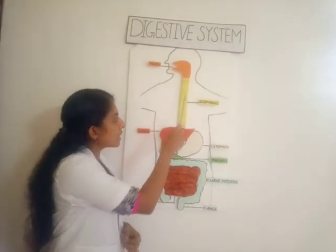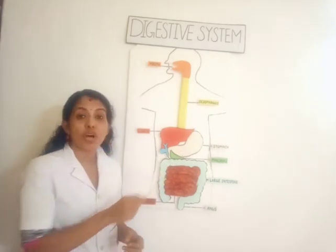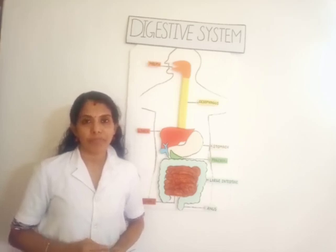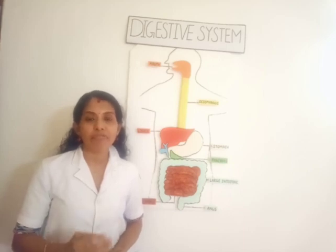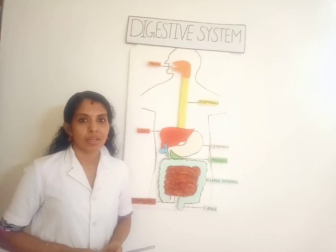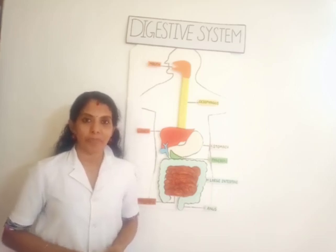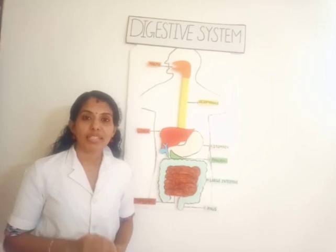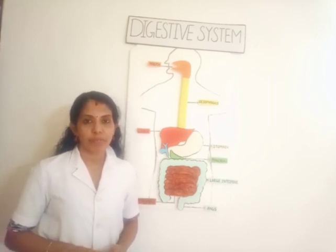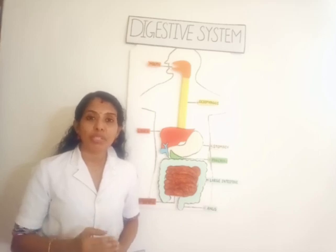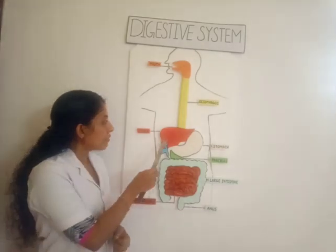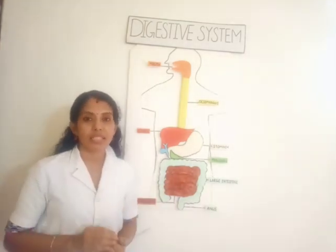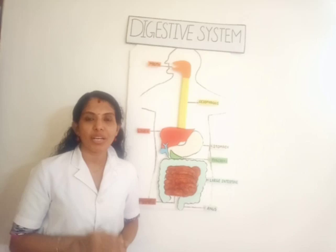Then food passes through the esophagus and reaches the stomach. The stomach is a bag-like organ where certain digestive juices are produced. These digestive juices break down proteins and fats into simpler substances. Food remains in the stomach for up to three hours, then passes to the small intestine. The small intestine is a long coiled tube whose walls produce certain digestive juices. The liver and pancreas also produce digestive juices which reach the small intestine.